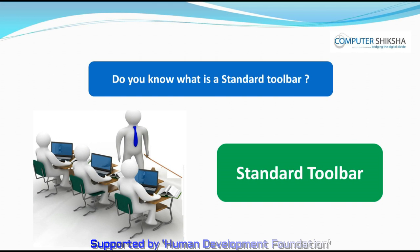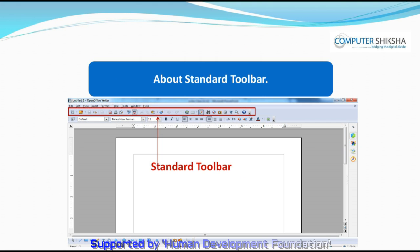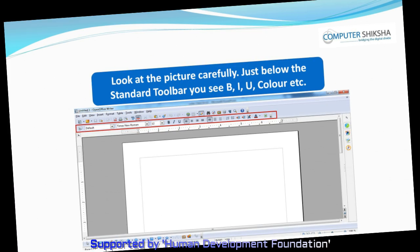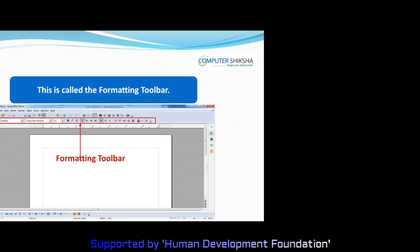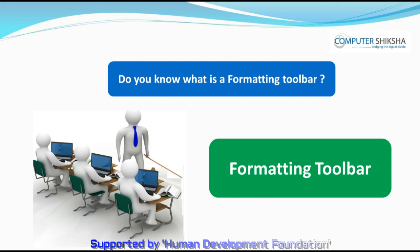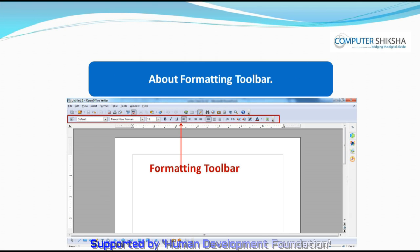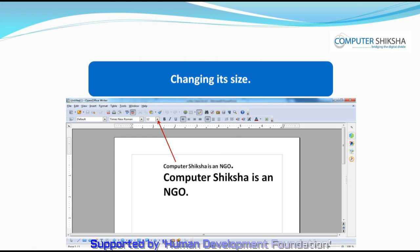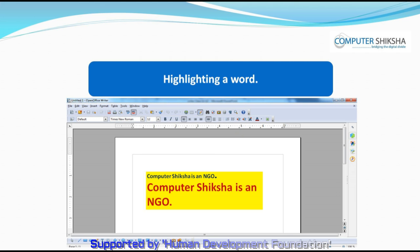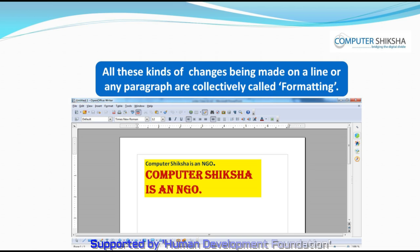Do you know what is a Standard Toolbar? Standard Toolbar is a shortcut method by which a user, as per his requirements, can modify it himself and use those options directly. Just below the Standard Toolbar, you see B, I, U, Color, etc. — this is called the Formatting Toolbar. Formatting means any changes you make on a selected paragraph or line, like changing the style of writing a word, or changing its size, or changing the color of a word, or highlighting a word. All these kinds of changes are collectively called formatting.